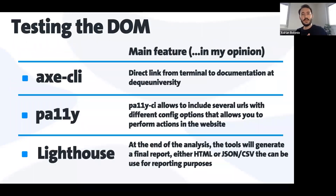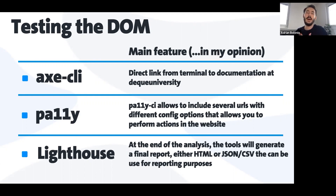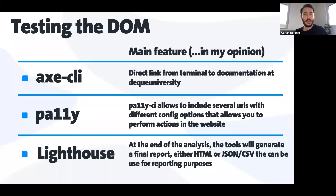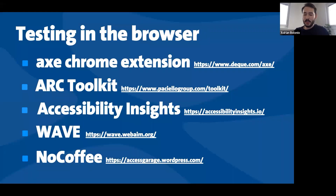Those are the main features of every automated tool I've shown you. At the beginning I said only 20 to 50% of issues can be captured via automated tests, so manual testing is equally important. I'm going to show you some Chrome extensions I use to manually test the accessibility of the websites we create.